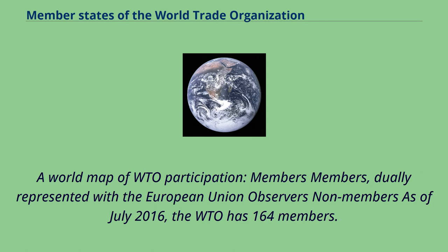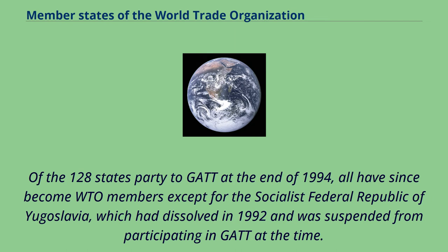A world map of WTO participation shows members, members duly represented with the European Union, observers, and non-members. As of July 2016, the WTO has 164 members. Of the 128 states party to GATT at the end of 1994, all have since become WTO members except for the Socialist Federal Republic of Yugoslavia, which had dissolved in 1992 and was suspended from participating in GATT at the time.